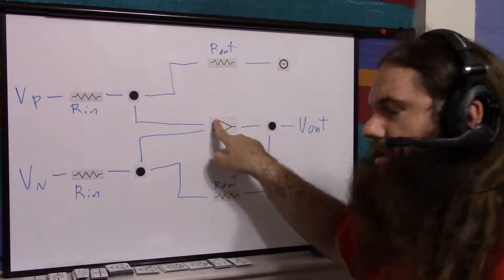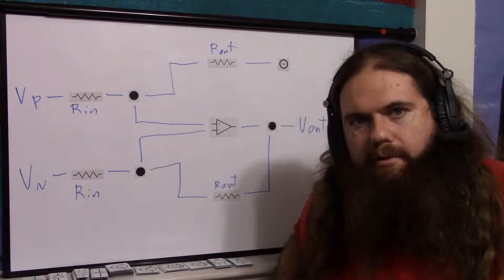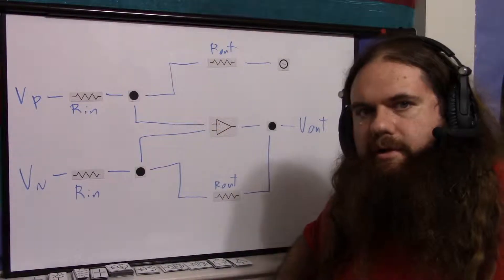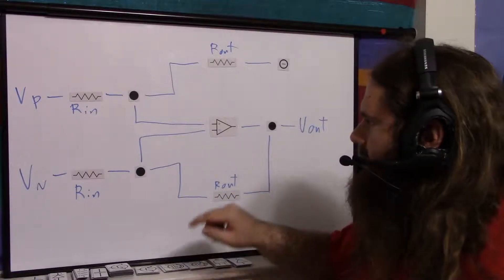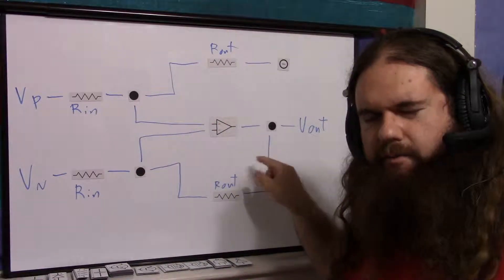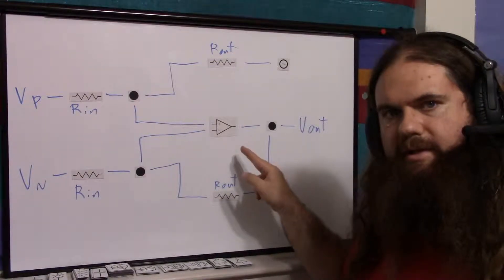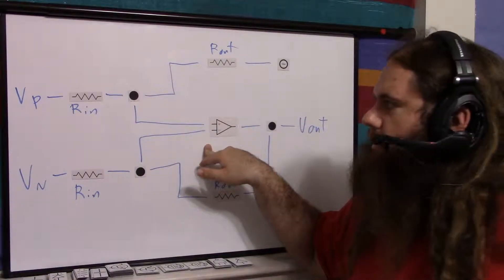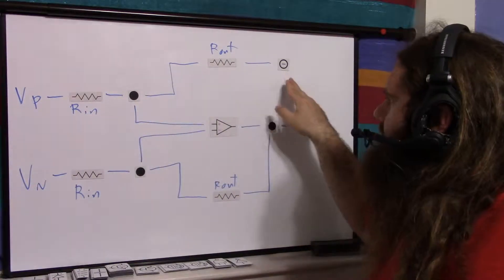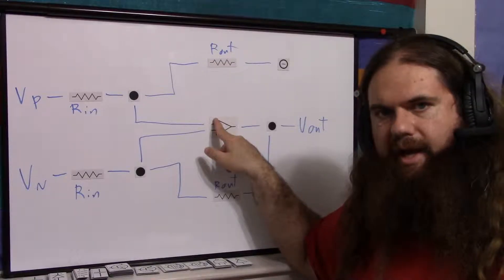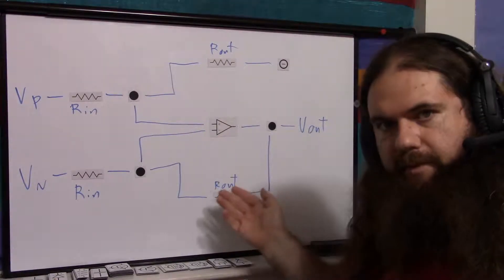As usual, the assumptions for op amp math are that the inputs have infinite impedance so no current flows in, the output has effectively zero impedance, and the circuit operates such that both inputs are exactly the same voltage. So whatever vp is, the voltage divider between vp and zero sets the summing point — it sets what appears at the non-inverting input — and the feedback must set the inverting input to that same value.